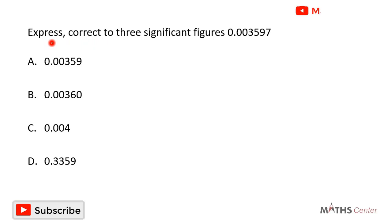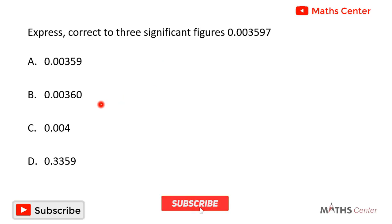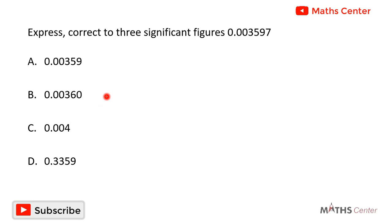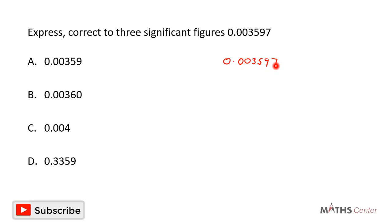Express correct to 3 significant figures: 0.003597. This is a multiple choice question, so we are going to solve the question and after that we will pick the correct option. We are going to correct this number 0.003597 to 3 significant figures.